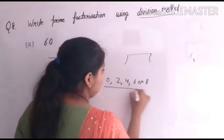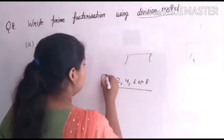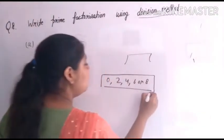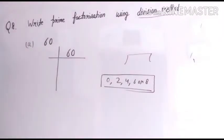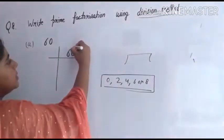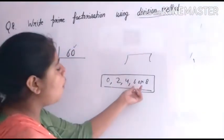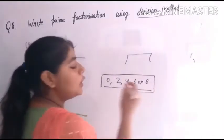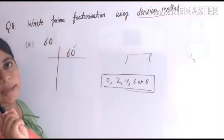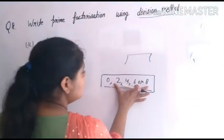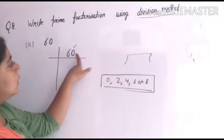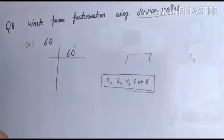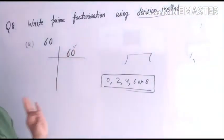...we had studied this before — the test of divisibility. If the last digit of any number is zero, two, four, six, or eight, it means that number is exactly divisible by two. In these numbers, if any of these appear as the last digit, it means the number is completely divisible by two.